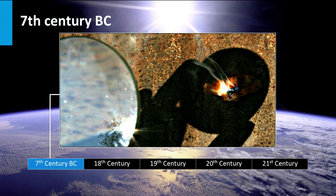As early as the 7th century before Christ, humans have used the first solar technology. They used magnifying glasses to make fire. Later, the Romans and Greeks used concentrating mirrors for the same purpose as well.